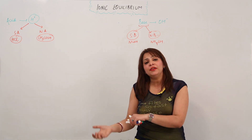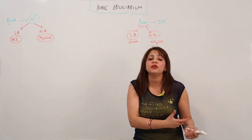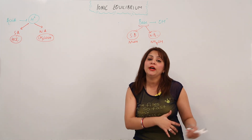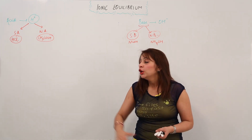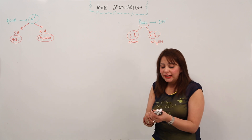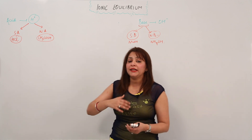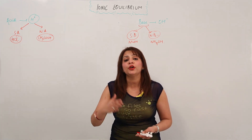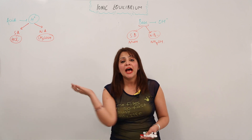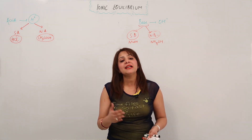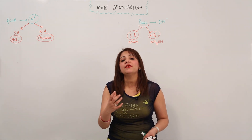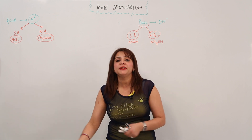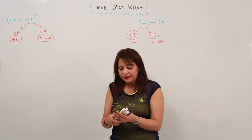Accordingly, the H⁺ ions are released or the hydroxide ions are released, and they are classified into acids and bases. I want to write an ionization constant expression for an acid as well as for a base, so I am writing a general equation that is applicable for all examples you take into consideration.